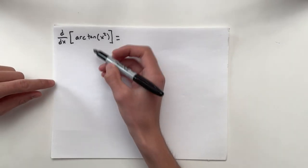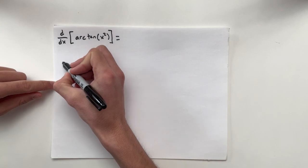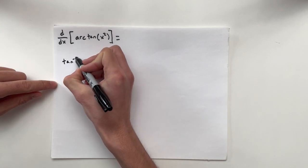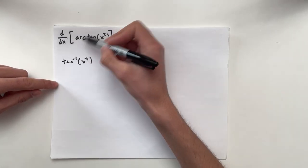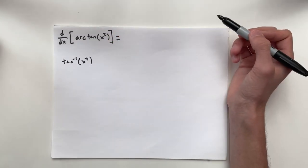You can see this as tan inverse x squared. That's another way. Arc tan. These are interchangeably the same thing.